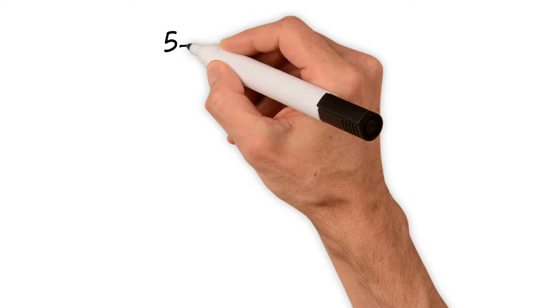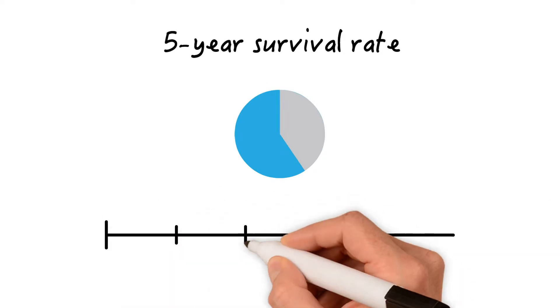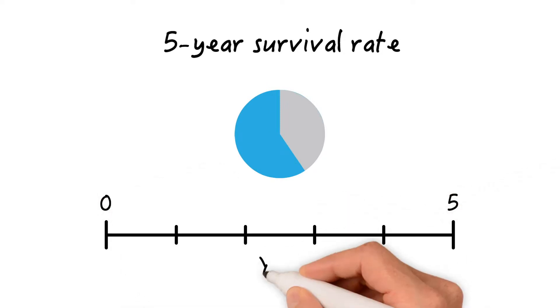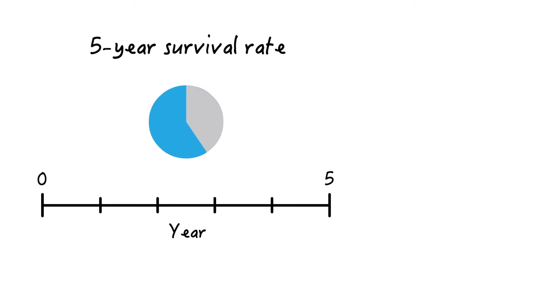Let's start with the 5-year survival rate. It's commonly used in oncology to express the proportion of individuals surviving a cancer for at least 5 years. If 60% make it to the 5th year, the 5-year survival rate is said to be 60%.